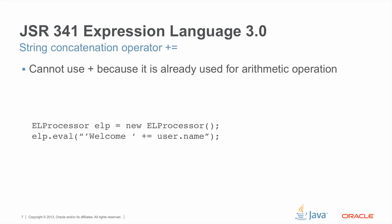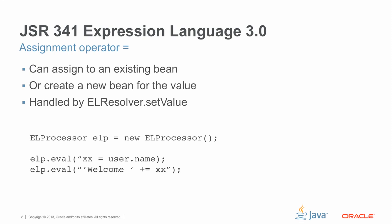I'm going to talk about several new operators in this language. The first is a string concatenation operator. This operator takes two operands and converts them into string objects, then applies the string concatenation operation. This works like the Java string concatenation operator. The second useful operator is the assignment operator, which allows a user to assign a value to an existing bean, or create a new bean if it is not there, and the new bean assumes the new value.